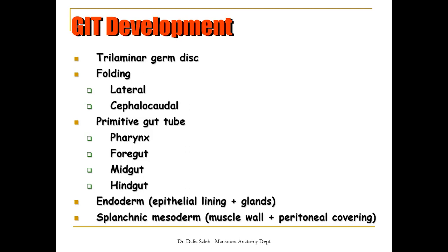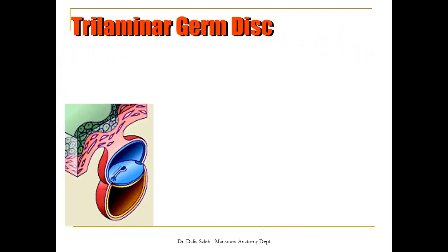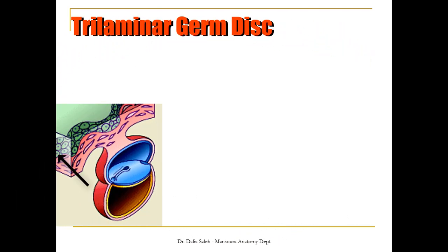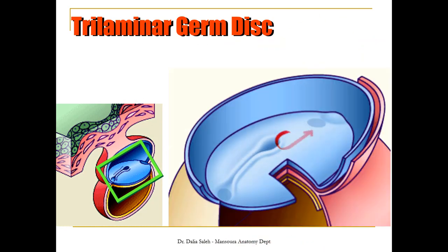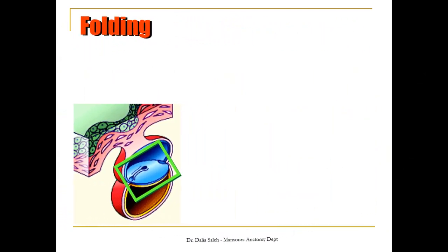Let's go back to the third week of development. This is the endometrial layer and this is the gestational sac. You can see the amniotic cavity, the yolk sac cavity, and in between them lies the trilaminar germ disc. If we enlarge it, you can notice the three germ layers: the ectodermal layer, the mesodermal layer, and the endodermal layer. Notice that the mesodermal layer splits into two layers — the one covering the amniotic cavity is called the somatopleural layer, and the one covering the yolk sac cavity is called the splanchnopleural layer.